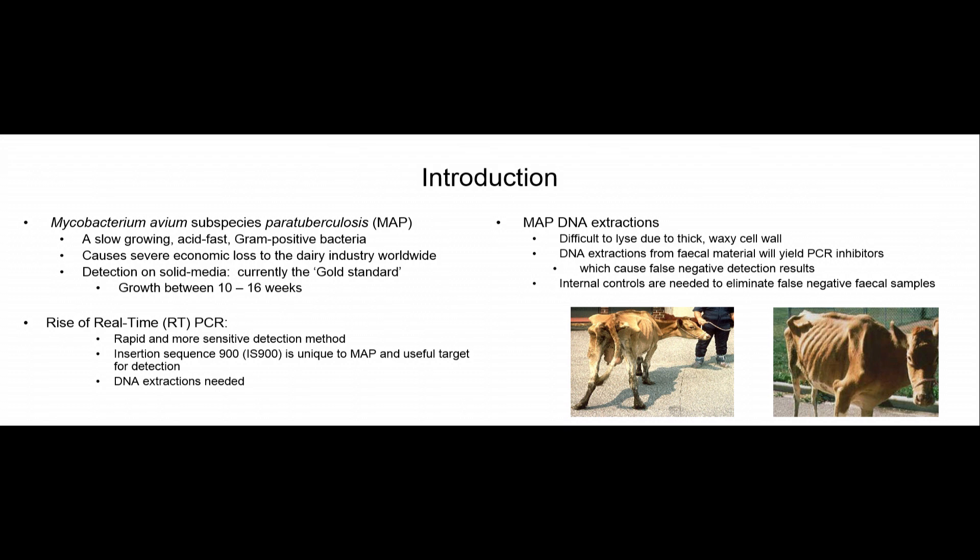I'd like a small introduction about the topic. MAP is a slow-growing organism, it's acid fast, it's a gram-positive bacteria, and as you all know, it causes severe economic losses to the dairy industry worldwide. The actual detection is done on solid media, and currently it's the gold standard, and the growth is between 10 to 16 weeks, so it's quite long.